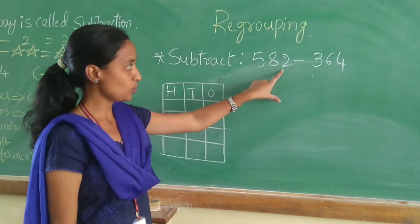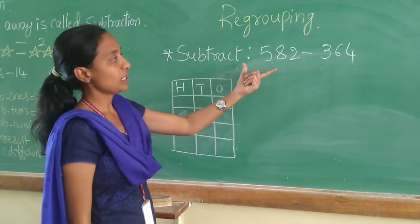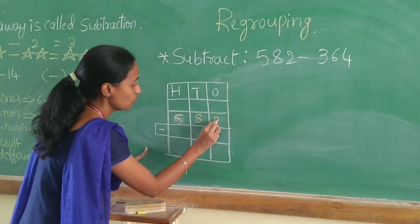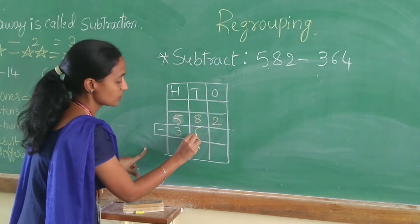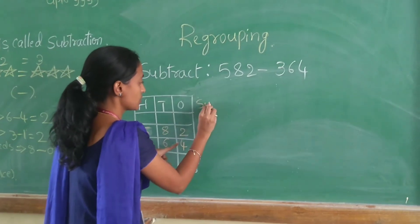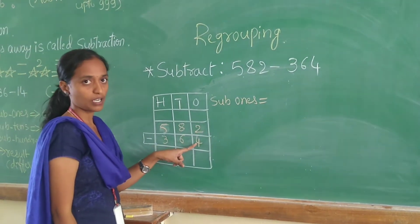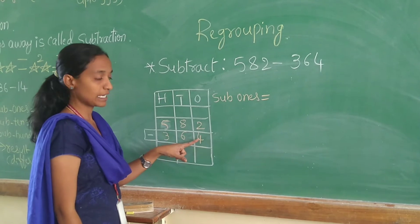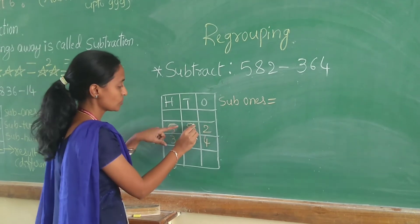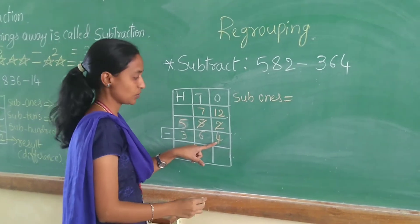Subtract 582 minus 364. First we need to place the given numbers in the respective column. 582 minus 364. We have to subtract 1s. 2 minus 4, we can't do it because 4 is greater than 2. So we need to borrow 1 from the 10s place. So 8 becomes 7, here 2 becomes 12. So 12 minus 4 is equal to 8.